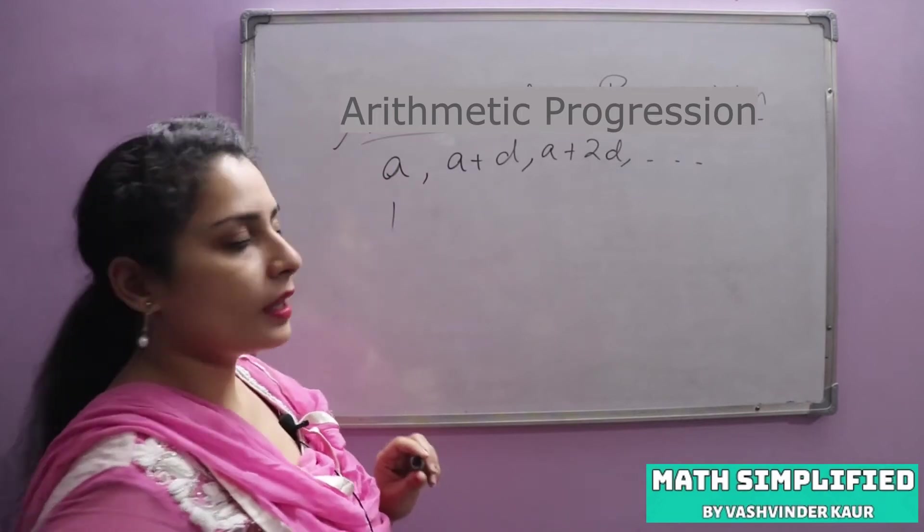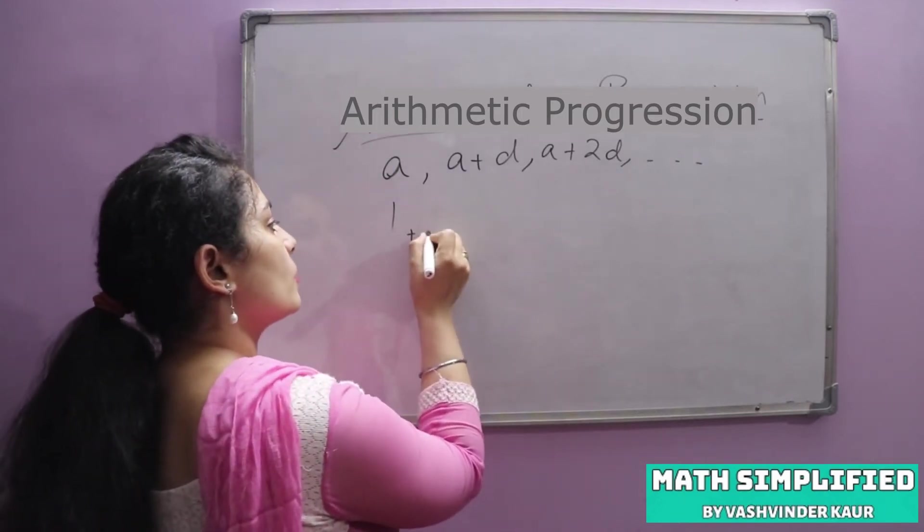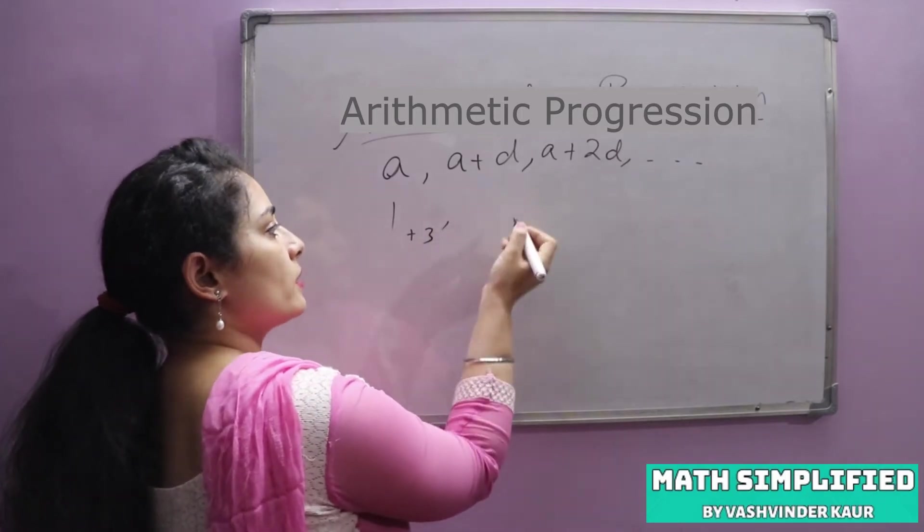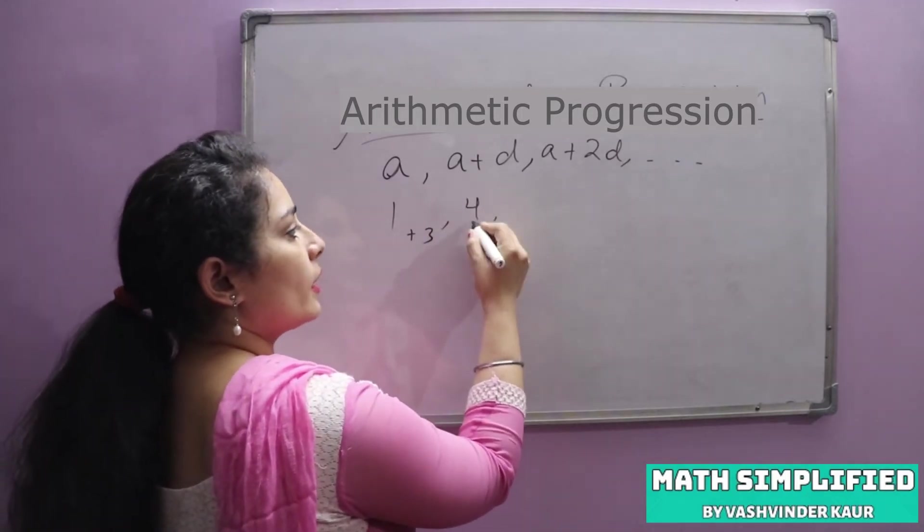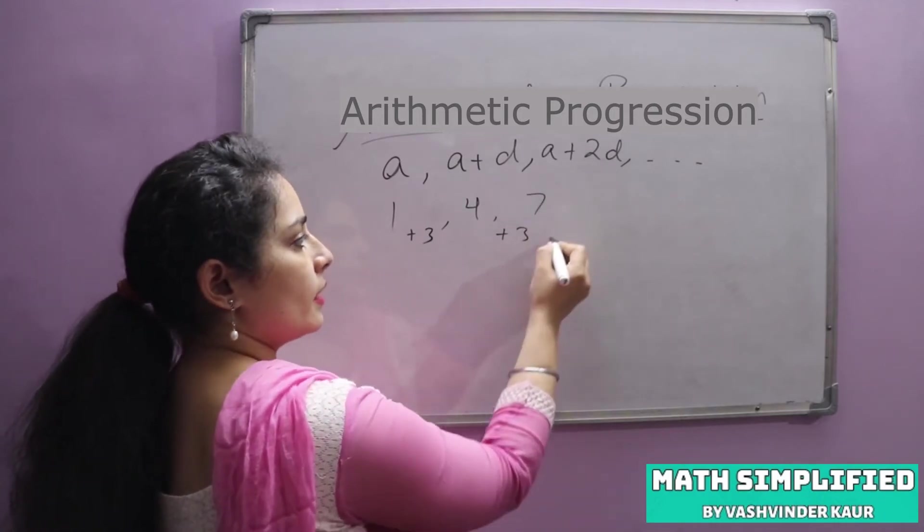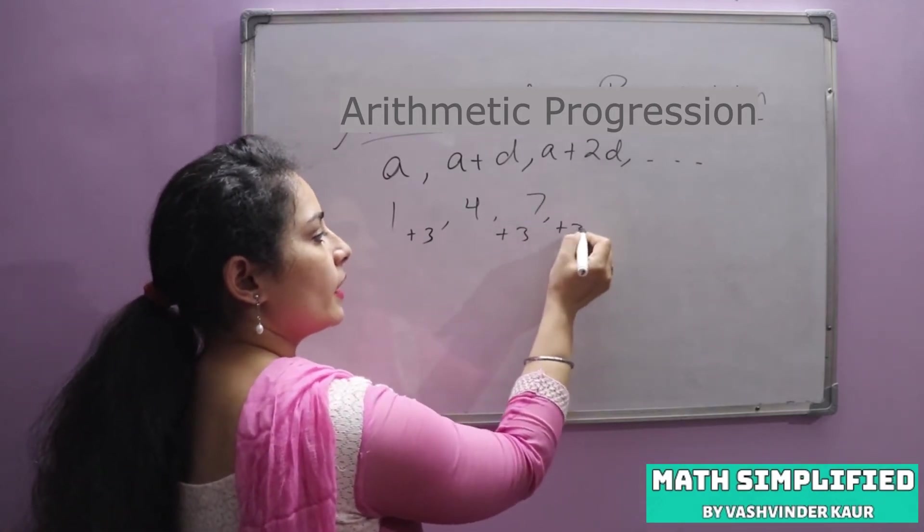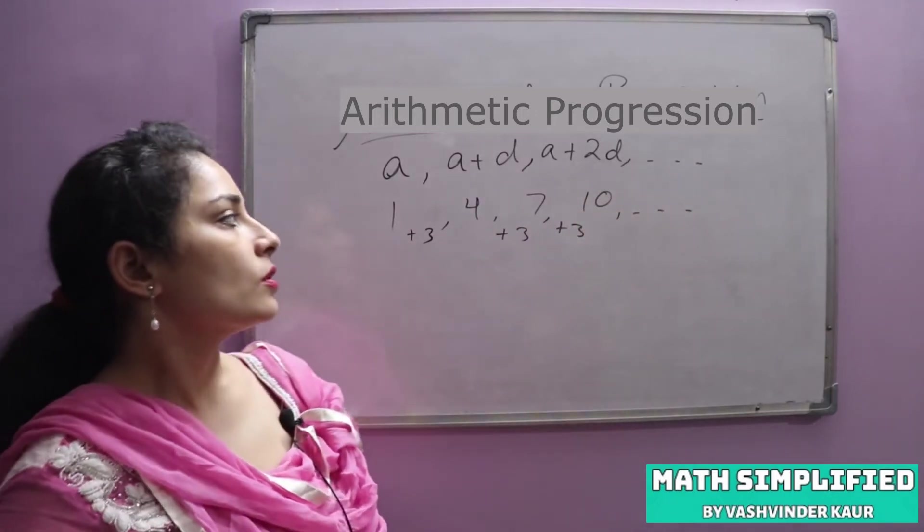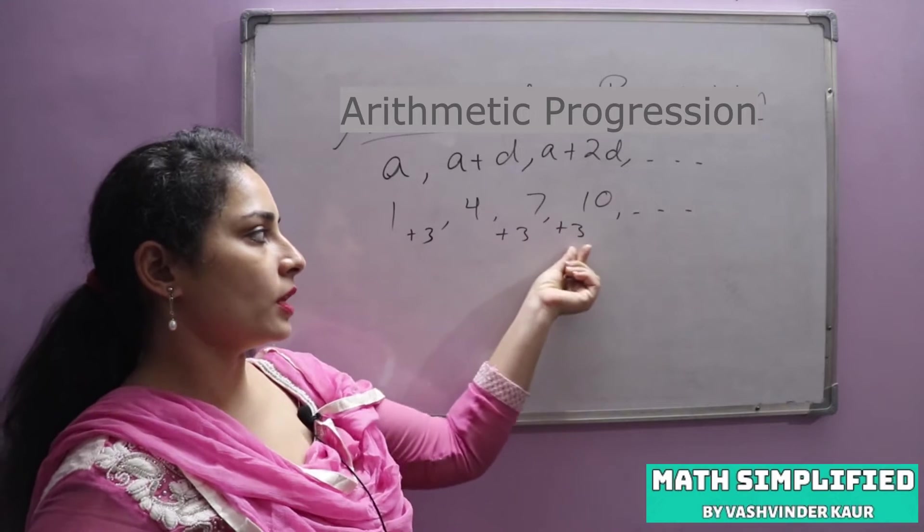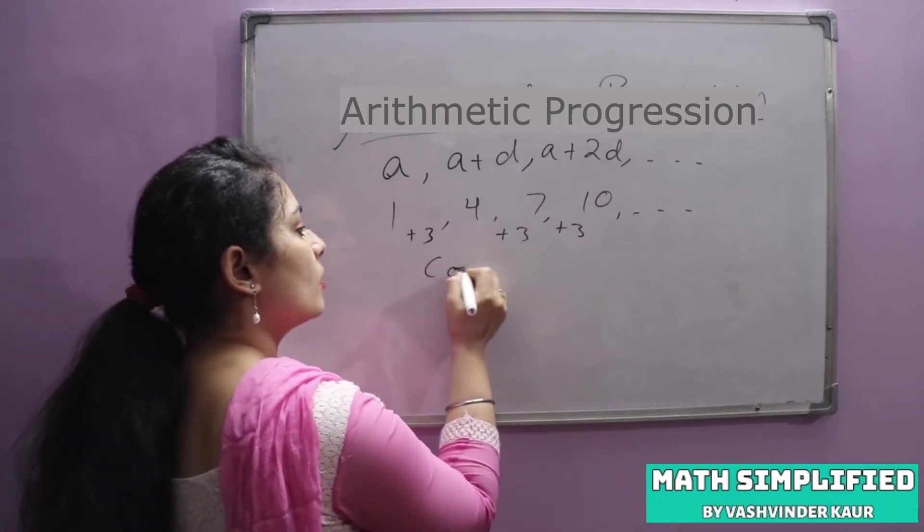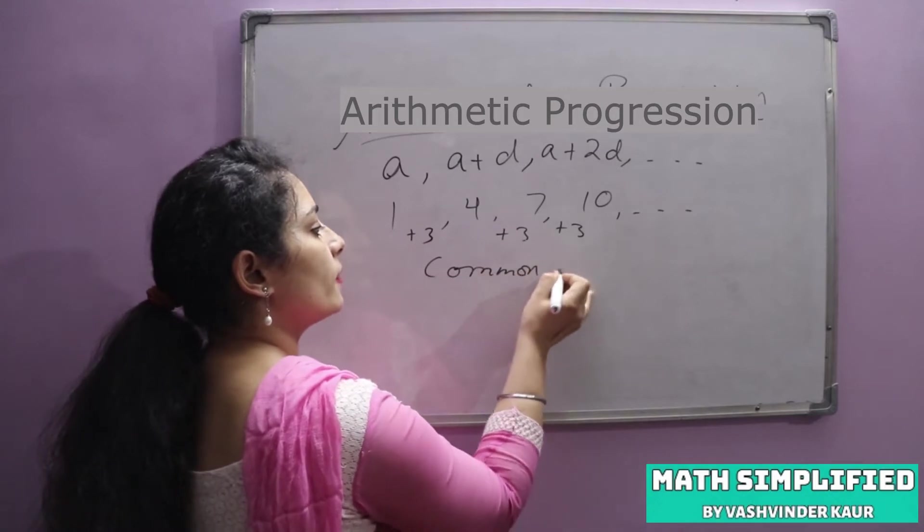If I have first number 1, then suppose I will add 3. So I will add 3, next time 4. Then again I will add here 3, next time 7. Then again I will add here 3, next time 10 and so on. Same number add 3, next time I will add 3. This 3 is called common difference.